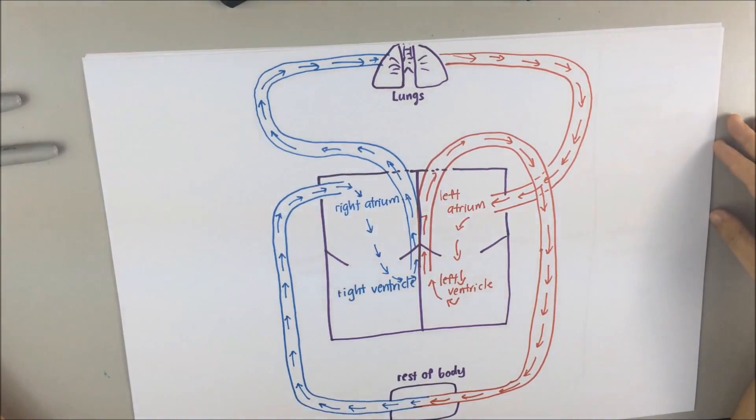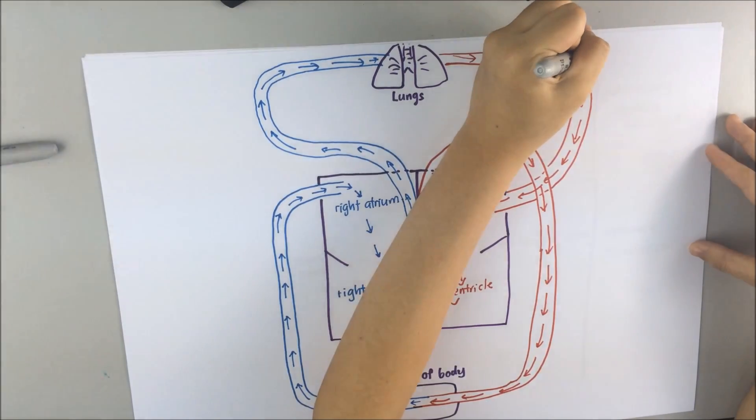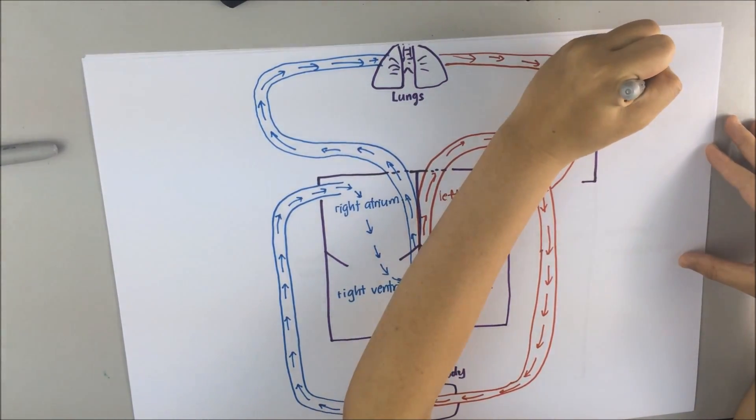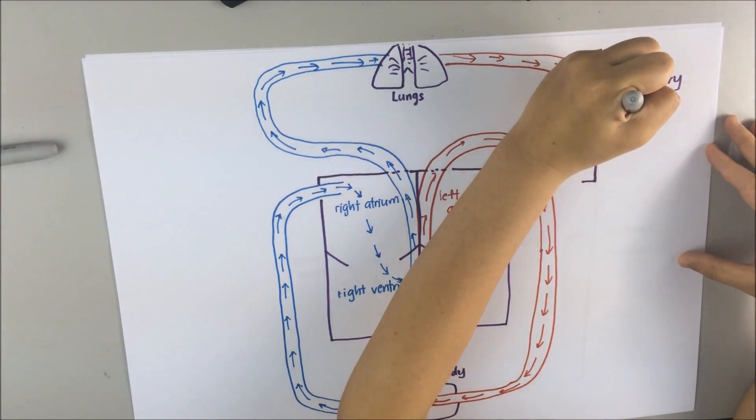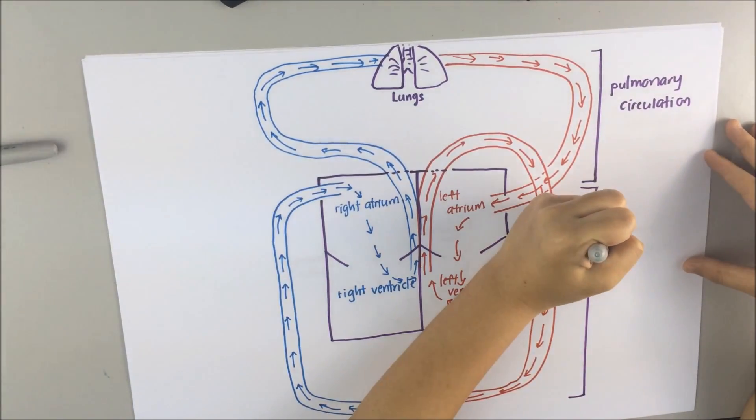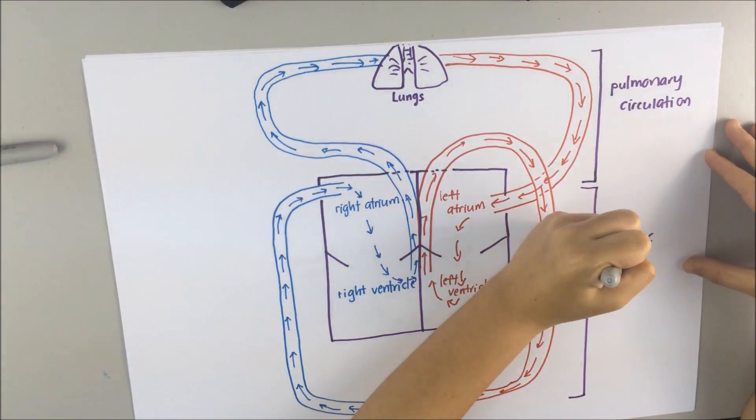As you can see here, you will find that actually the system is made out of two circuits. One links the heart and the lung which is known as pulmonary circulation. Another one links the heart with the rest of the body which is known as systemic circulation.